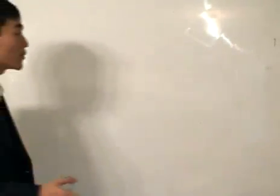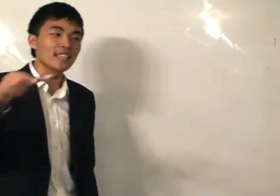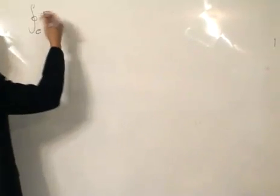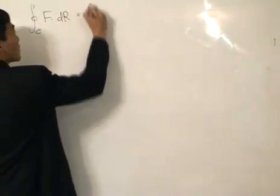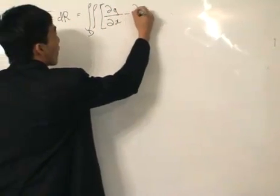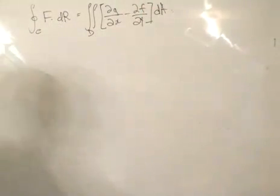We're going to prove, or at least show, a special case of Green's theorem. Green's theorem says that if we have a curve that is simply closed, positively oriented, and piecewise smooth, and an area D where D consists of the interior of C and C itself, and a vector function with continuous first partial derivatives on D, we can write the closed loop line integral of the vector function F with respect to dr as the double integral over D of the partial of G with respect to x, minus the partial of F with respect to y, times dA. That's Green's theorem.